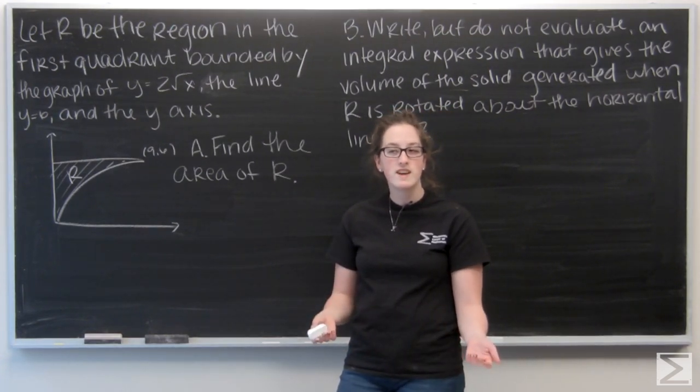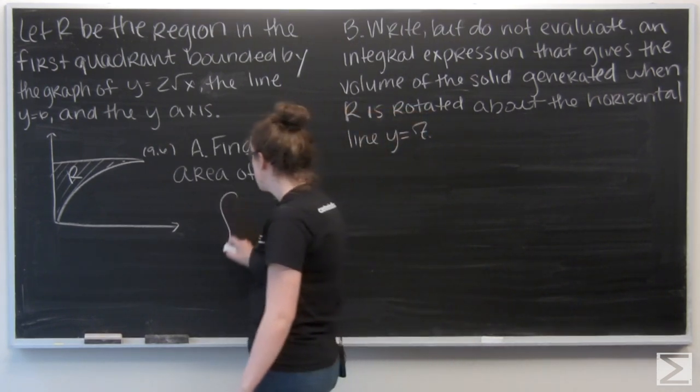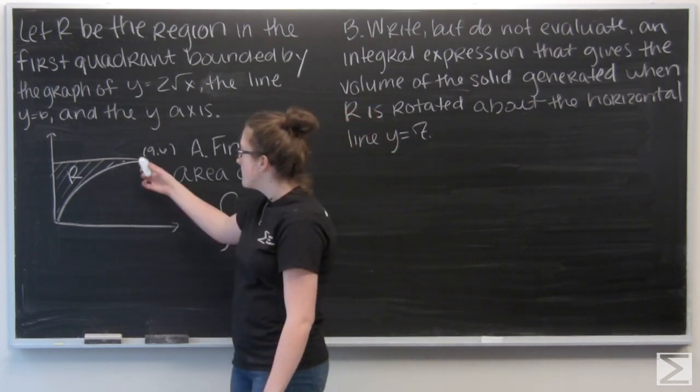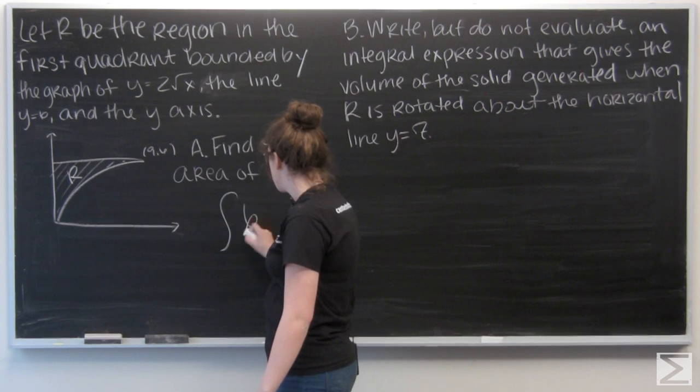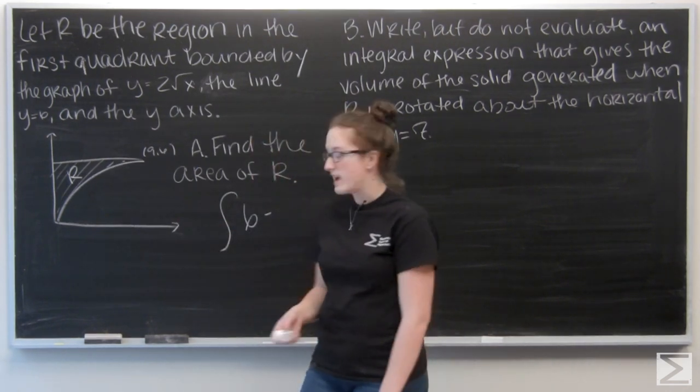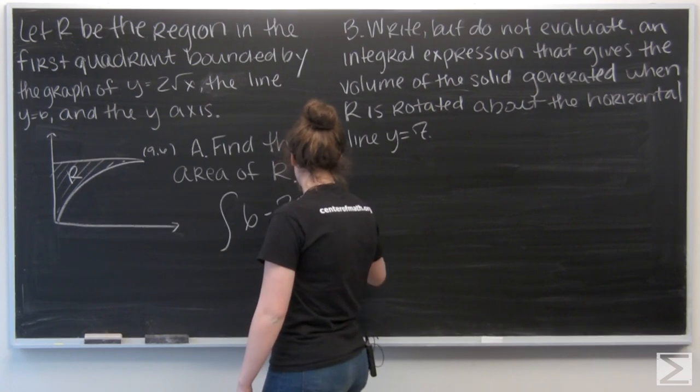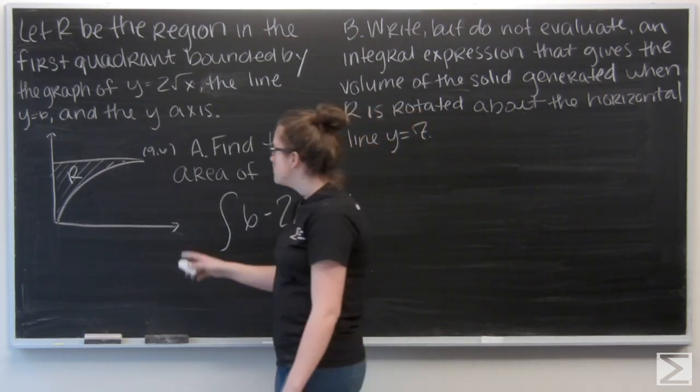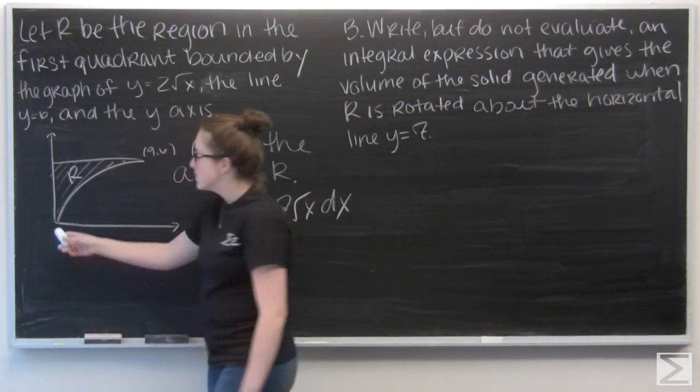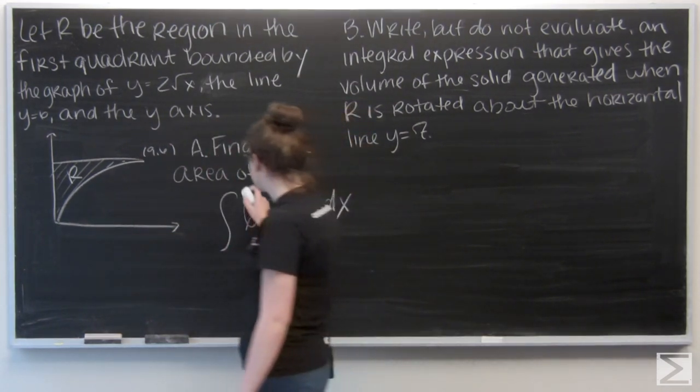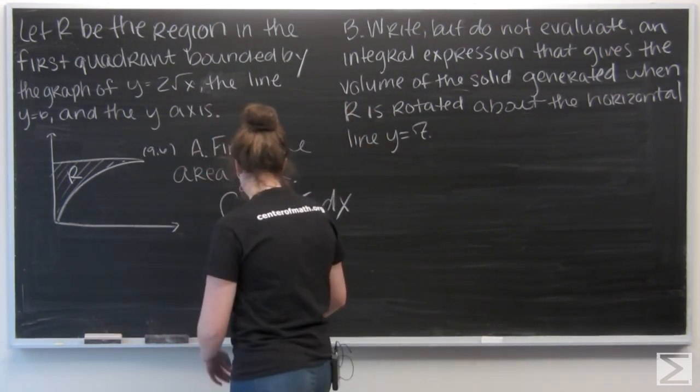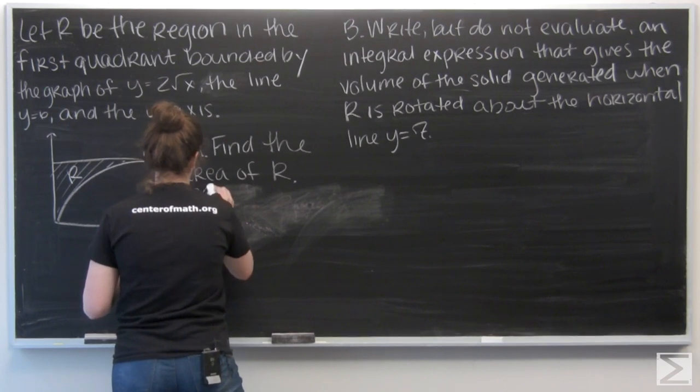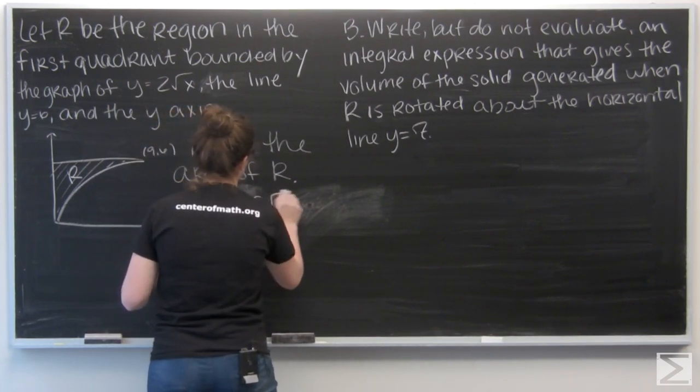The first part wants us to find the area of R. Remember when we're finding the area of a region we want to integrate, but we want to subtract top function minus bottom function. Well, here my top function is y equals 6, and my bottom function is 2 square roots of x. Now, I want to evaluate with respect to x, but first I need some bounds. It looks like x goes from 0 to 9, so let me make those the bounds of integration. Let me rewrite this a little bit better.